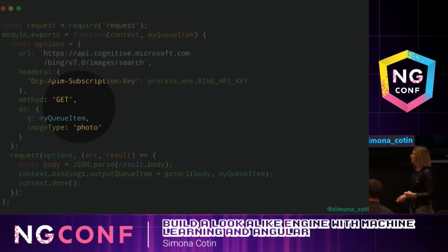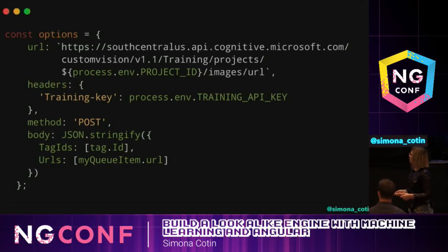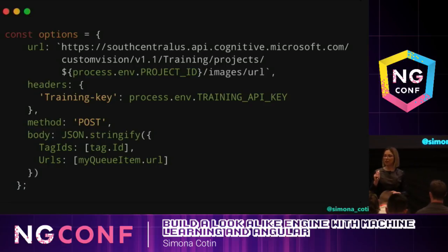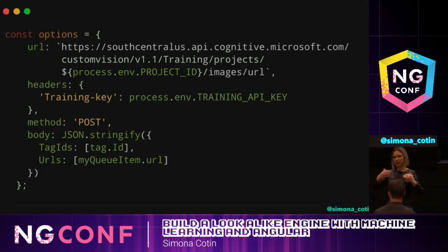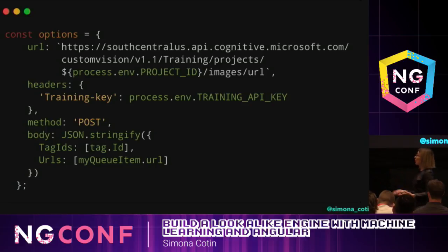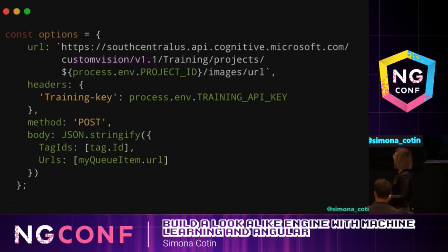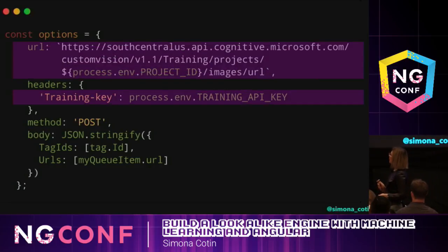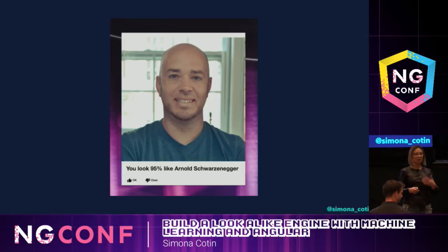For those of you who haven't seen Azure Functions, this is familiar code — it's JavaScript. We're creating a function that receives two parameters: the context object used to interact with the function's runtime, and the queue item, which is just a string message. Then we create a request, send it to the Bing Search API with that queue item, and choose to return images. The second function sends an HTTP request to the Custom Vision API, authenticating with our key and sending the tags and URLs. So we've managed to build this. Now Burke looks like Arnold Schwarzenegger, not Leia.